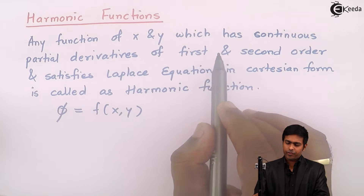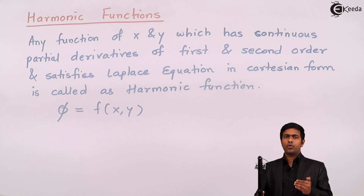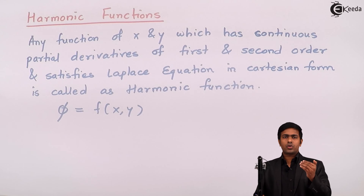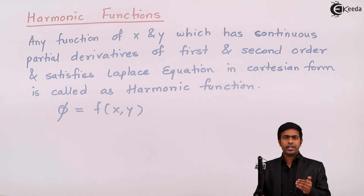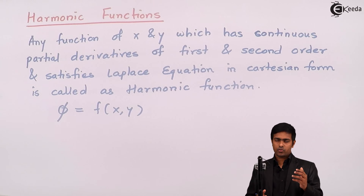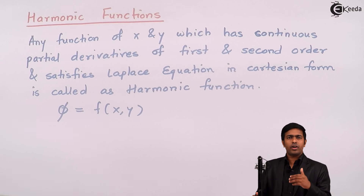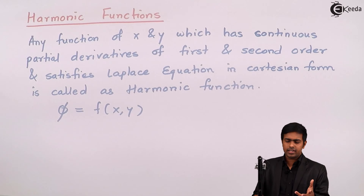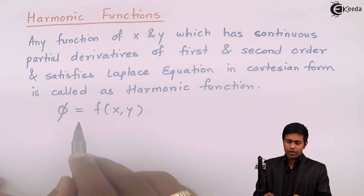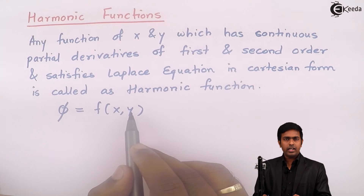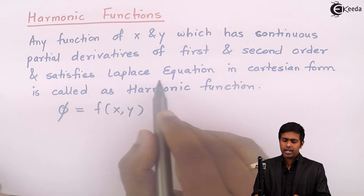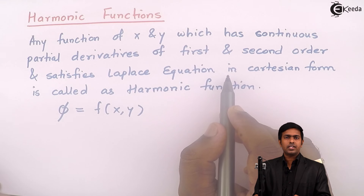It means we should get the values of ∂φ/∂x, ∂φ/∂y, ∂²φ/∂x², and ∂²φ/∂y². If these first and second order derivatives exist for phi, and if it satisfies the Laplace equation, then phi is harmonic.